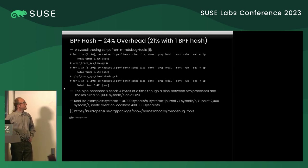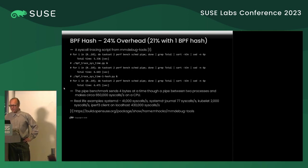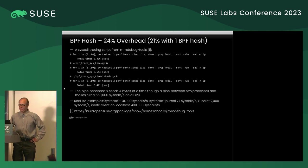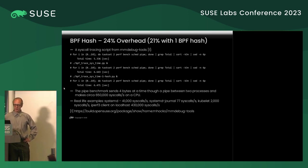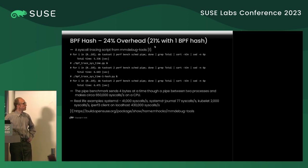You'd think BPF would be a solution in this case, but as far as I found out it's not really. I used a syscall tracing script that we have in the mm debug tools repository, and sadly it slows down the workload much more than the debugging module. I noticed the code uses two BPF hashes so I rewrote it to use just one, but it did not help — the overhead is still more than 20 percent.